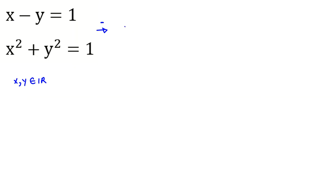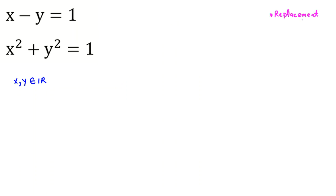If we subtract the two equations, we get x minus y minus x squared minus y squared equals 0. However, factoring from negative 1 isn't useful here, so instead we use a substitution approach. From the first equation, we take negative y to the right side to get x equals y plus 1.